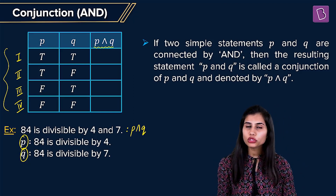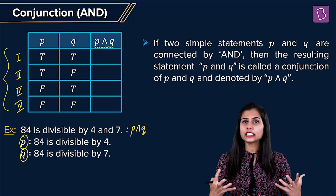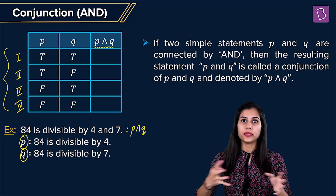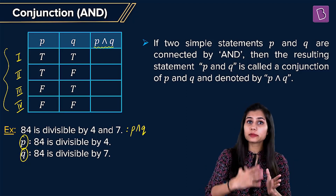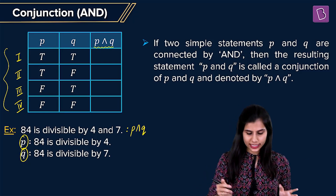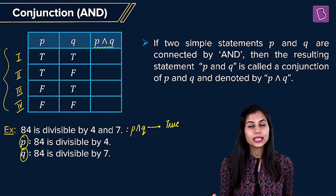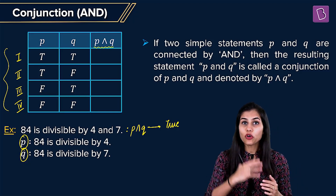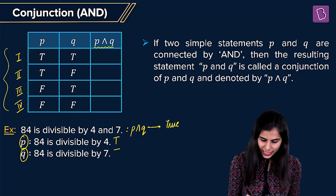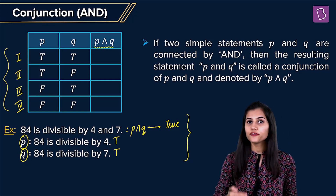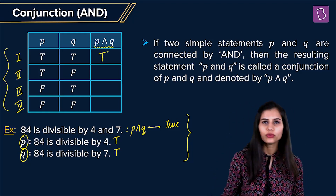Let's analyze the truth value of the compound statement '84 is divisible by 4 and 7.' It is saying 84 is divisible by both 4 and 7 — this is indeed true. 84 is divisible by 4: yes. And it is also divisible by 7: yes. So the truth value of the conjunction statement is true. Analyzing the individual component statements: '84 is divisible by 4' is true, and '84 is divisible by 7' is also true. From this, when P and Q are both true, P ∧ Q is also true.